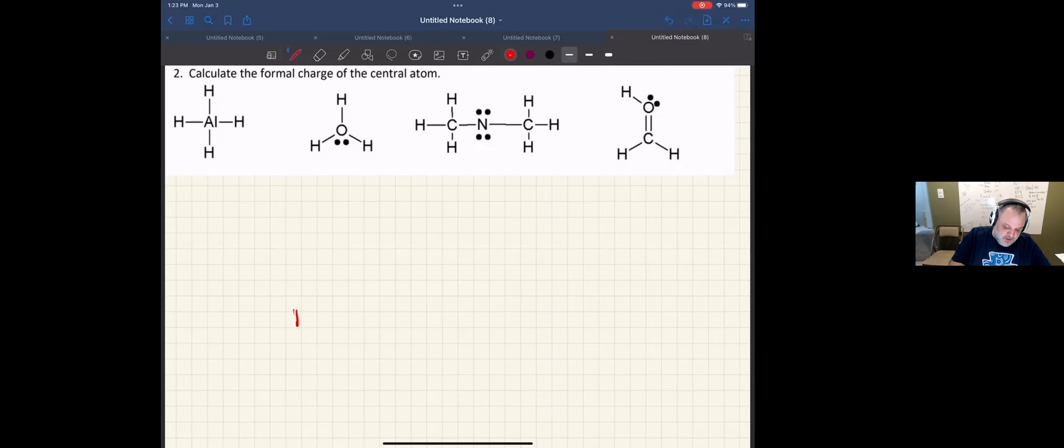Okay, remember that the formal charge is equal to the number of valence electrons that we should have from the periodic table of elements around any particular atom minus the number of valence electrons that we assign it. And how do we assign it? We're going to split each electron in the bond evenly.